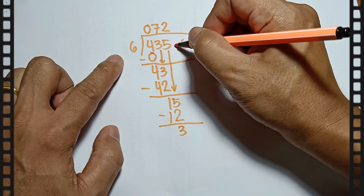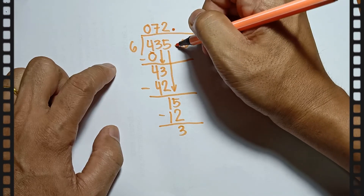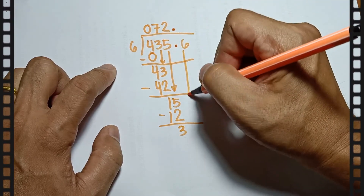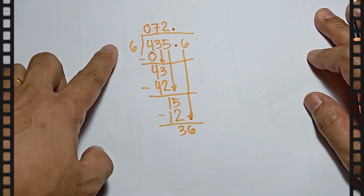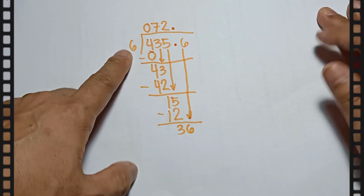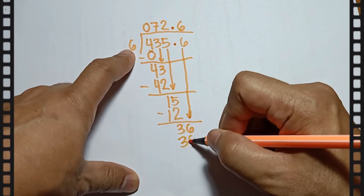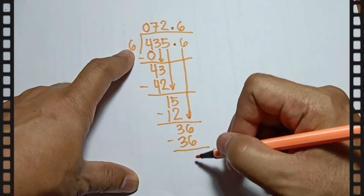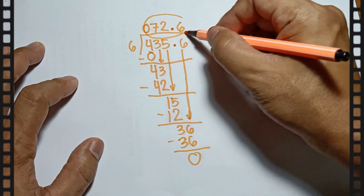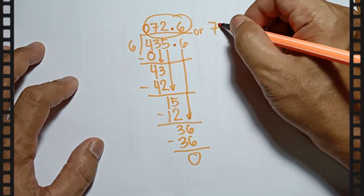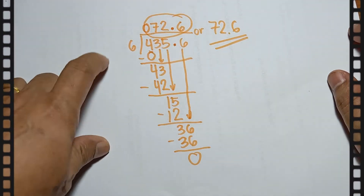As you can see, the decimal point is here, so just put the point directly on top of the point. Then bring down 6. How many 6s can you make from 36? 36 divided by 6 is 6. 6 times 6 is 36, then 36 minus 36 is 0. So the answer is 72.6 when you divide 435.6 by 6.